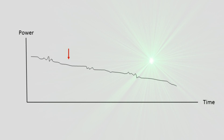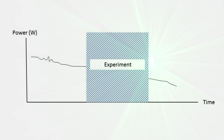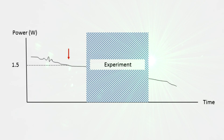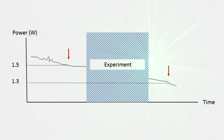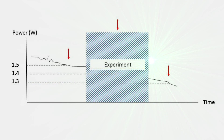Take a number of readings at enough time points to establish a pattern. As a simplified example, let's say the critical action during which you need to know the beam's power takes 30 seconds, and the power reading just before it was 1.5 watts and just after was 1.3 watts. If from the pre-mapping you saw that the drift rate is reasonably consistent over that time period, you can safely interpolate and use 1.4 watts as the power reading during the critical measurement time.